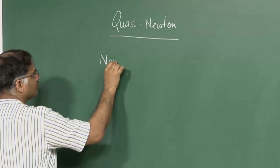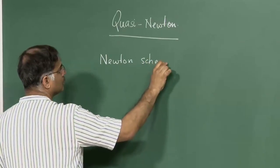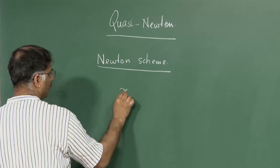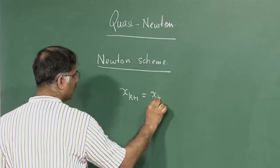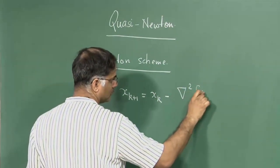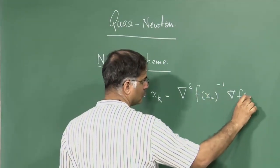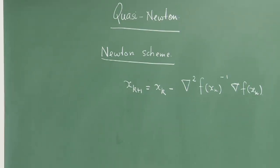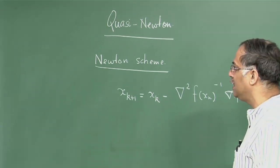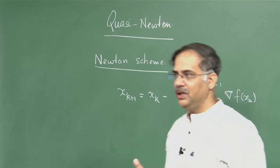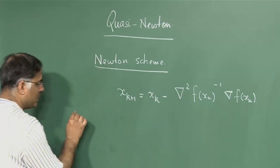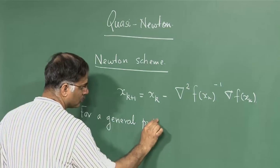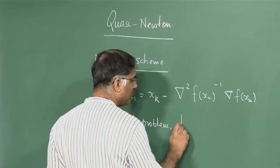In Newton iteration, the k+1-th iterate is written in terms of the k-th iterate. An important issue is that I do not really know whether my Hessian matrix at every point is positive definite. For a general problem, the positive definiteness of the Hessian is not known.